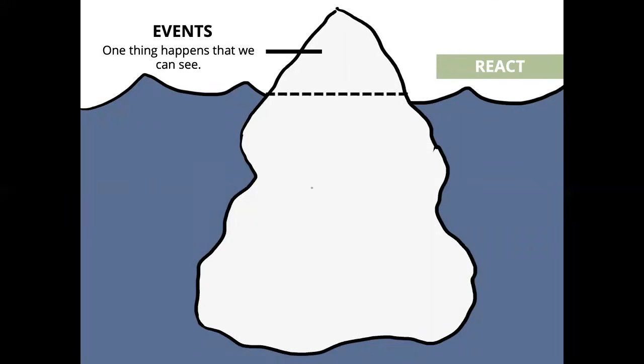Below the surface, there are three unseen levels. The first of these is the patterns level. If we string events together, we can recognize patterns as we begin to see changes or continuity over time. Once we find those patterns, we can try to create change by anticipating what will happen and making a plan to intervene.